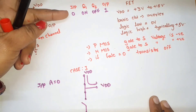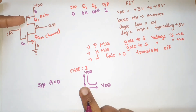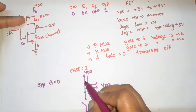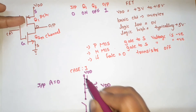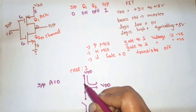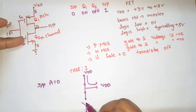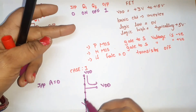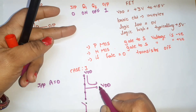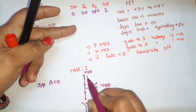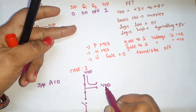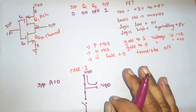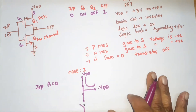To summarize Case 1: input is 0, Q1 is on (shown as short circuit), Q2 is off (shown as open circuit). VDD gets a path to the output through Q1, so output is approximately VDD — we get high voltage.